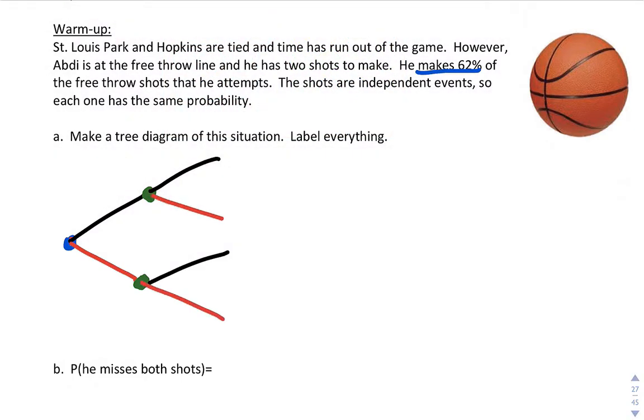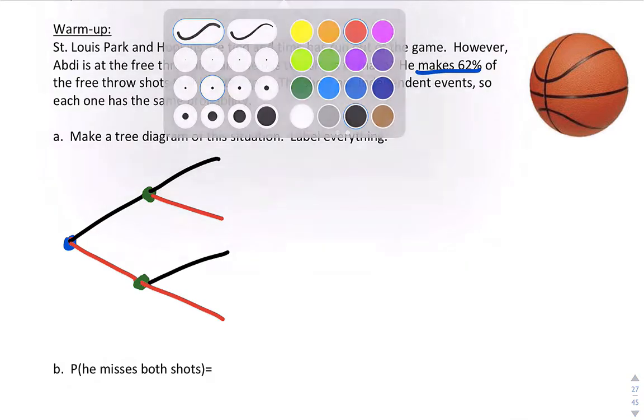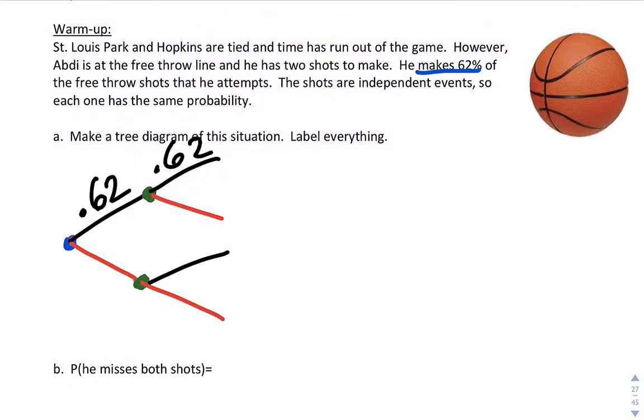Okay, so then let's do probabilities. So he makes 62% of all shots. I'm going to put that along the branches, 0.62. And if he makes 62%, if we take 100 minus 62, we get 38. So he misses 38% of his shots, 0.38.